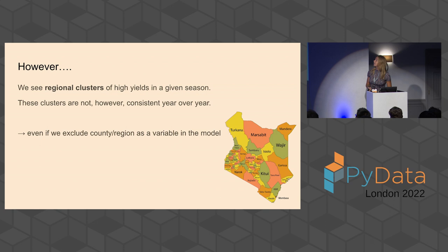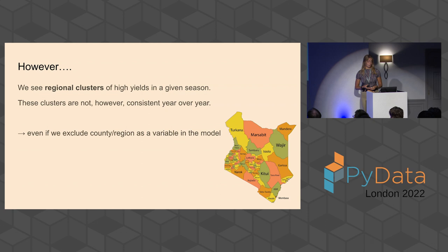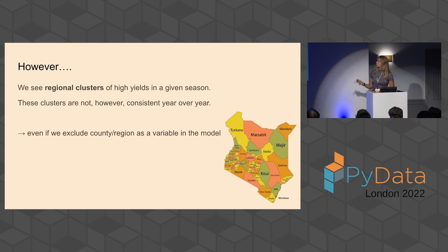The model seems to predict pretty accurately. However, when we do some sanity checks, we see regional clusters of high yields in a given season. For example, county Uasin Gishu will have really high yields, while counties Embu and Meru have really low yields. These clusters are not consistent year over year — maybe in the first year this was the distribution, but in the next year Embu and Meru actually have really good yields. This probably has something to do with rains, which are very unpredictable, especially now with climate change. Even if we excluded county as a variable in the model, it still predicted way higher yields for some counties than others — it found a way to still represent this regionality.